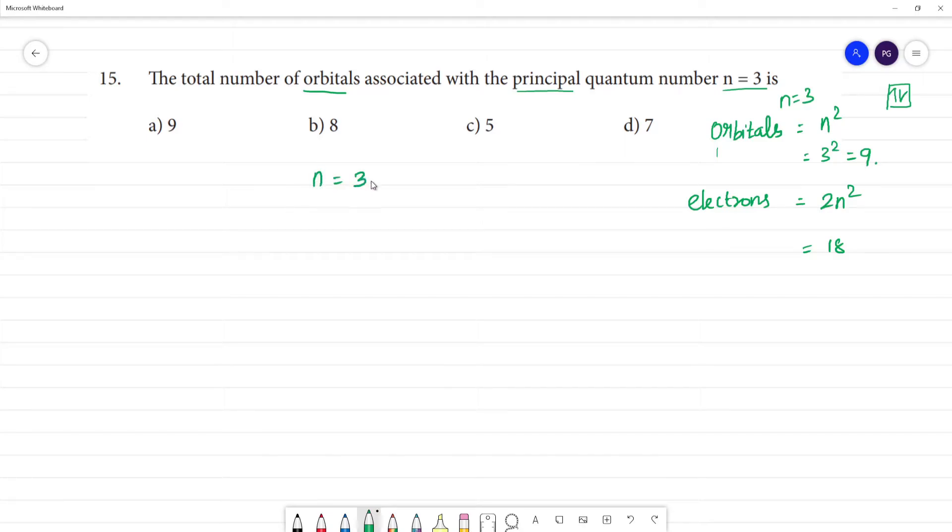So n = 3. The value of l is equal to 0, 1, and 2. Three values: 0, 1, and 2. So l is equal to 0 to n - 1. The value of l is n - 1, so 0, 1, and 2.